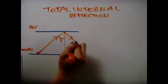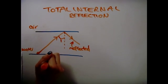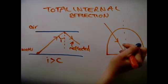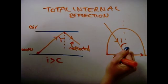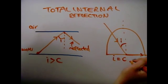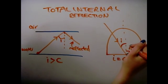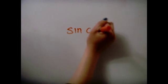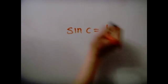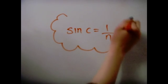Total internal reflection takes place when the angle of incidence is larger than the critical angle. The critical angle is the angle at which the light ray refracts at 90 degrees from the normal line. The sine of the critical angle is equal to 1 over the refractive index which is sine c equals 1 over n.